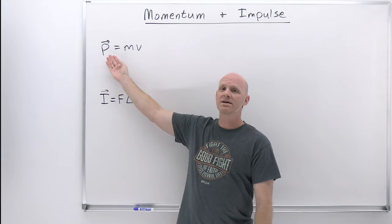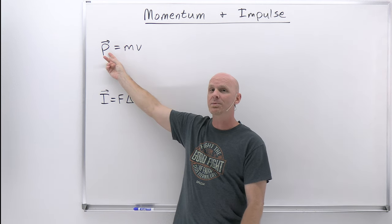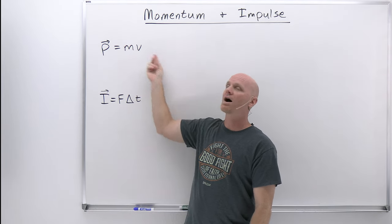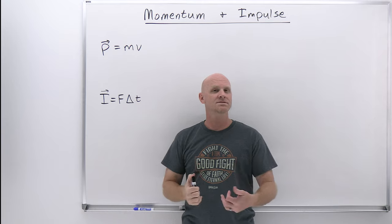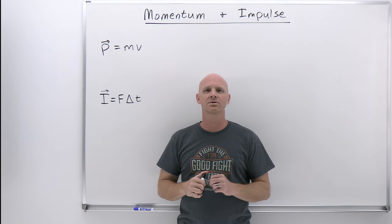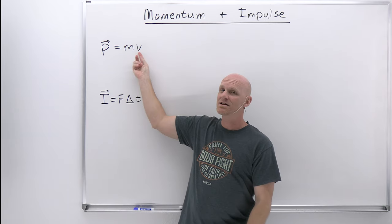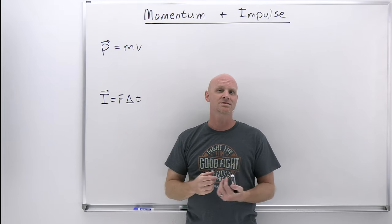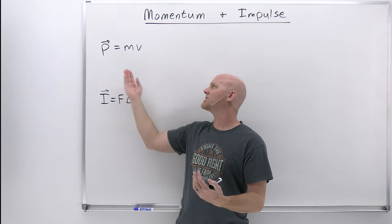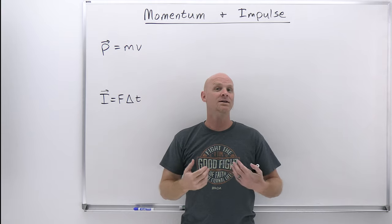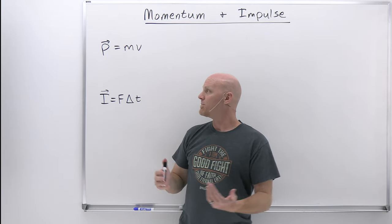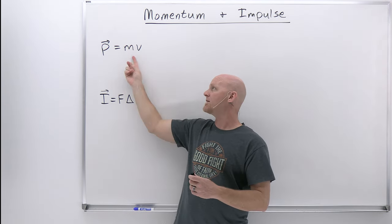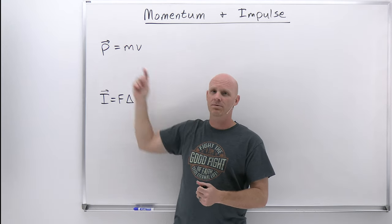If we look at the definition of momentum, its symbol is the lowercase letter p. It is a vector—it has both magnitude and direction—and it's equal to mass times velocity. So the mass matters. If it was the mass of a mosquito with an amoeba on it, who cares? It doesn't have a whole lot of momentum. Momentum has both those components—mass and velocity—and momentum is directly proportional to both. You double the mass, you've doubled the momentum. You double the velocity, you've doubled the momentum.